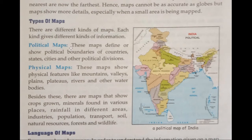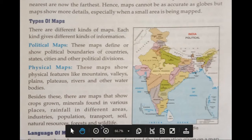Physical maps show physical features like mountains, valleys, plains, plateaus, rivers, and other water bodies. Besides these, there are maps that show crops grown, minerals found in various places, rainfall in different areas, as well as industries, population, transport, soil, natural resources, forests, and wildlife.